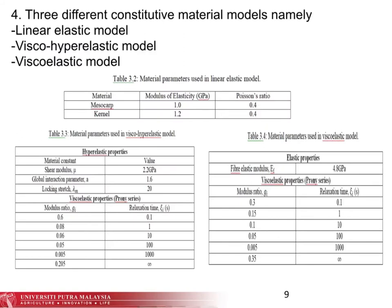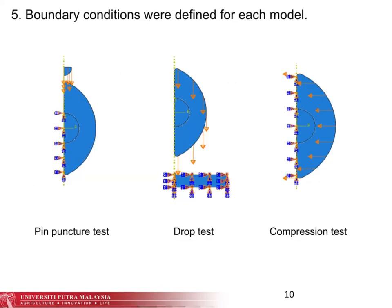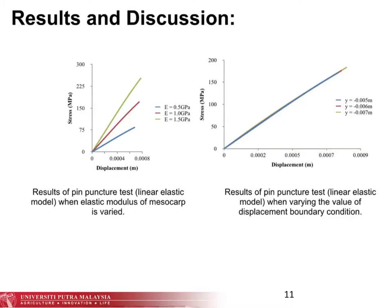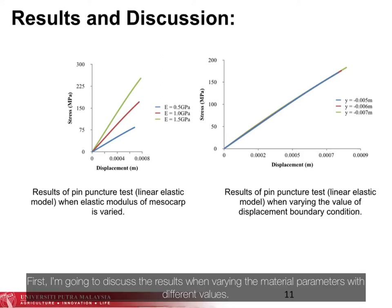Three different constitutive material models were used in this study, and the material parameters used are shown in the table below. The next slide shows the boundary conditions defined for each model. Next, I will start to discuss the results. First, I'm going to discuss the results when varying the material parameters with different values.